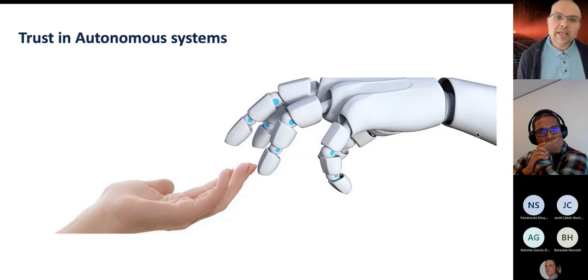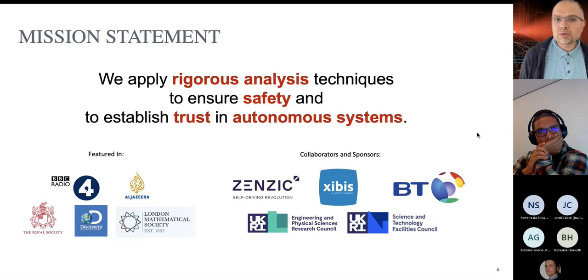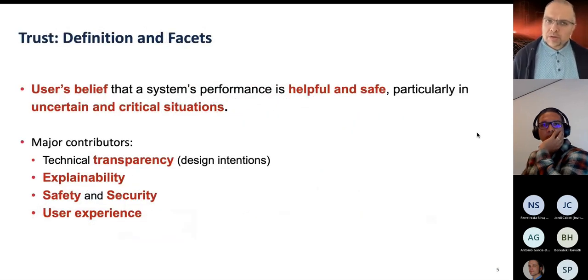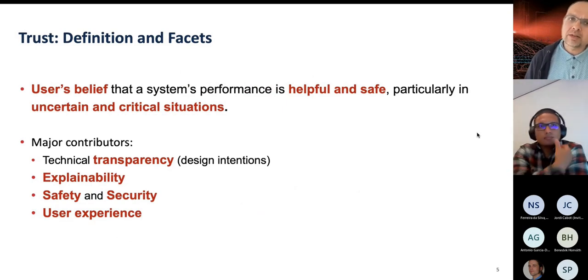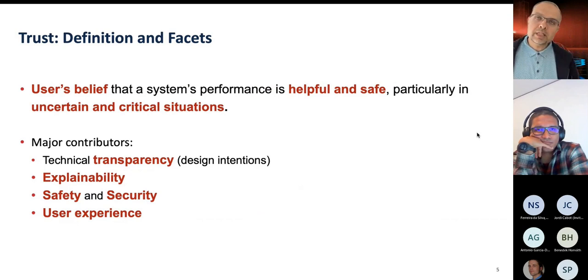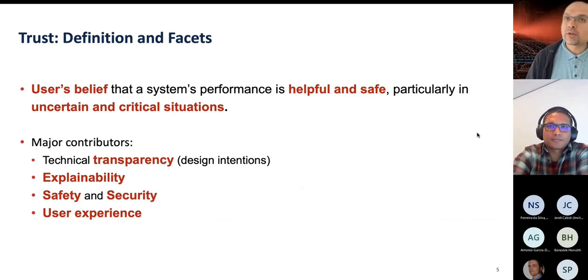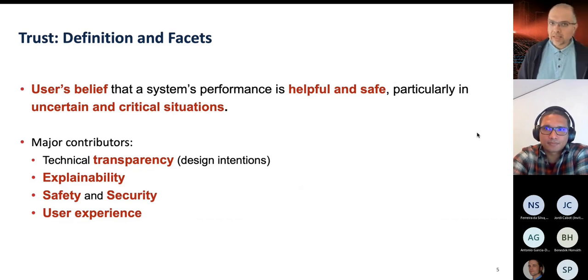Our main ethos is trust in autonomous systems and our idea is to apply rigorous analysis techniques and formal techniques, mathematical techniques to ensure safety and trust in autonomous systems. What do we mean by trust? Trust is an epistemic state of the user which means that the user thinks that the system is going to be helpful and is not going to harm him or herself in very difficult, uncertain, challenging scenarios.